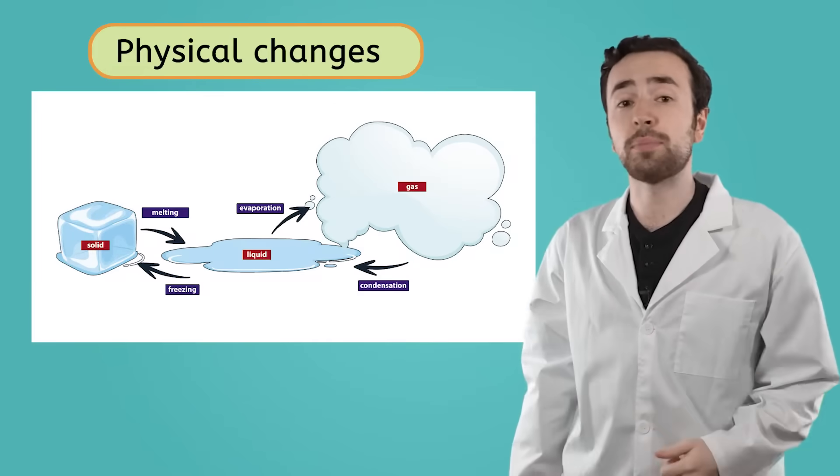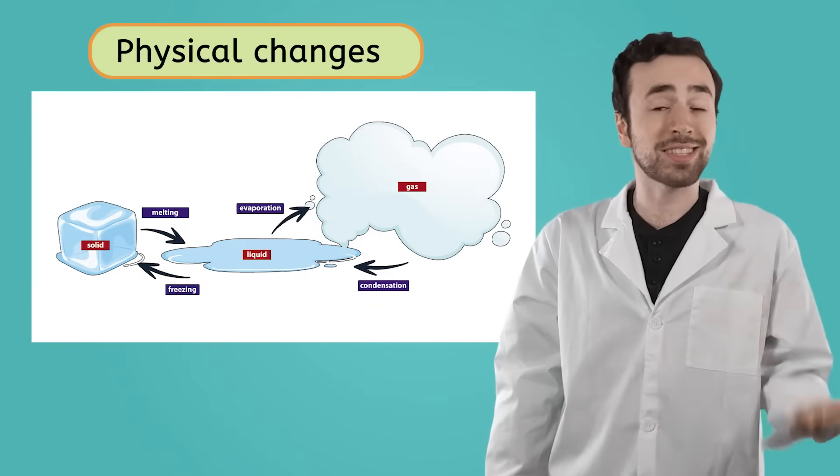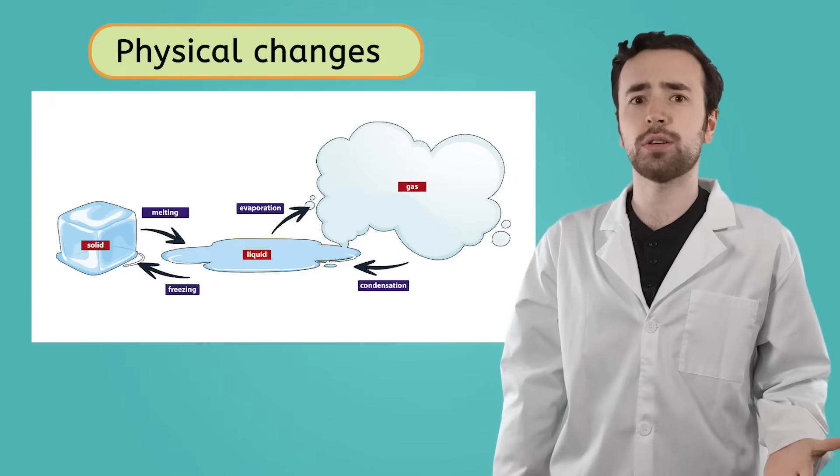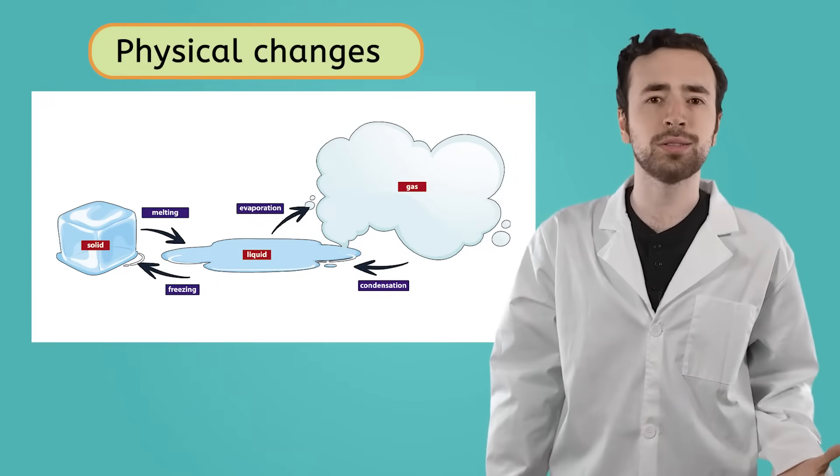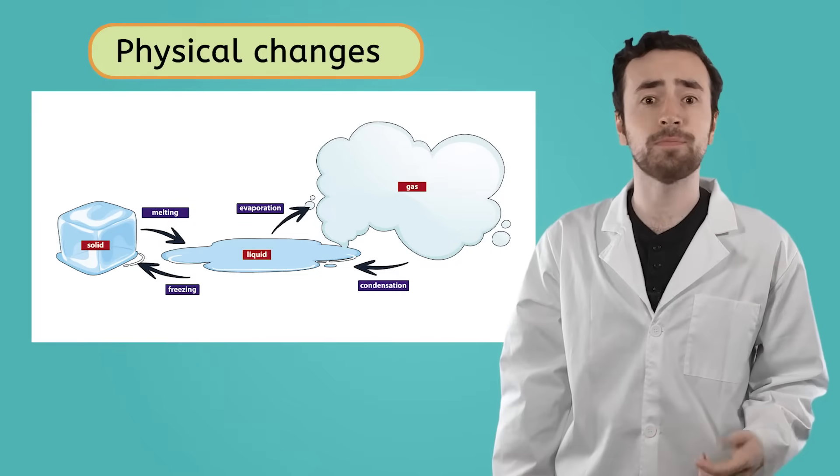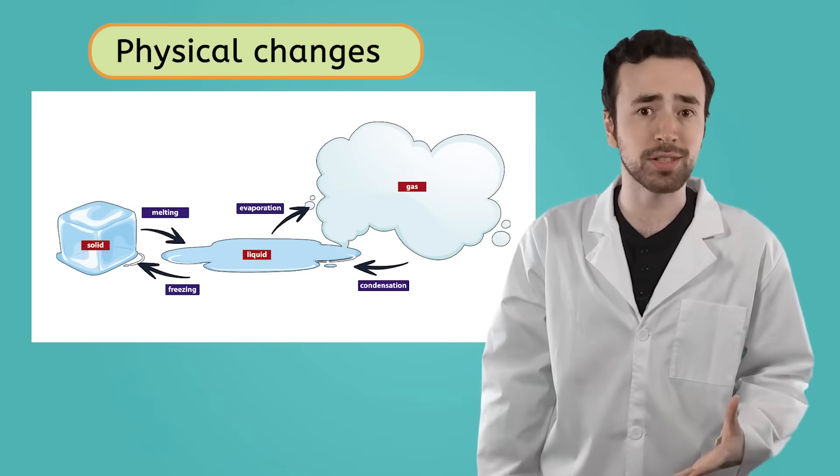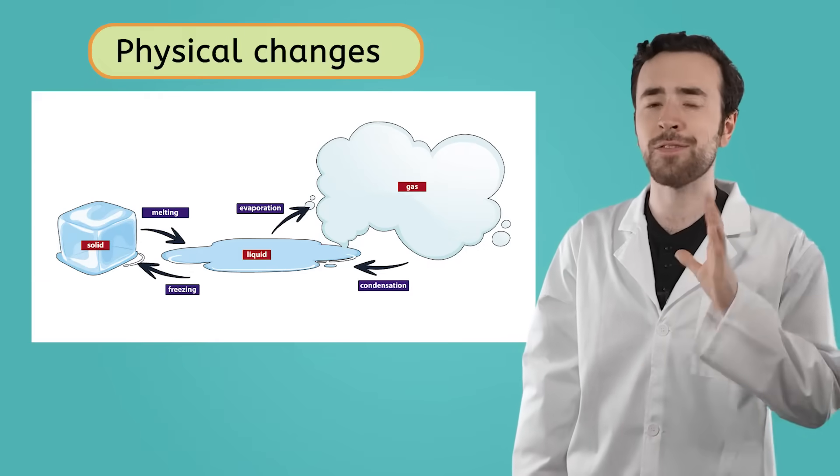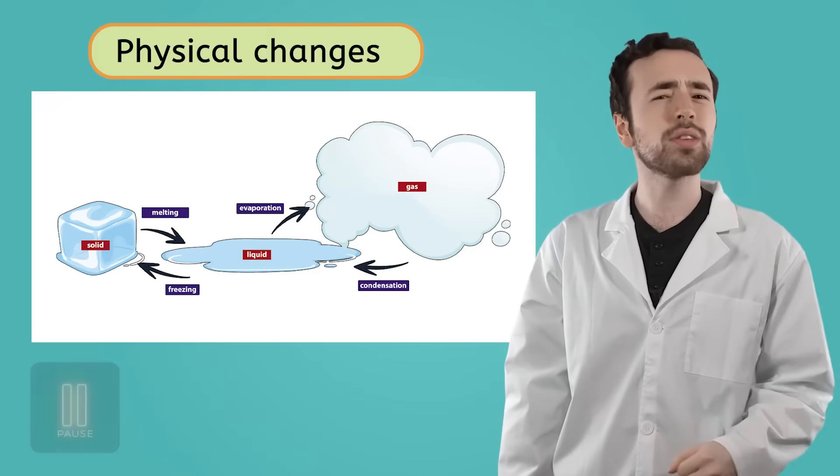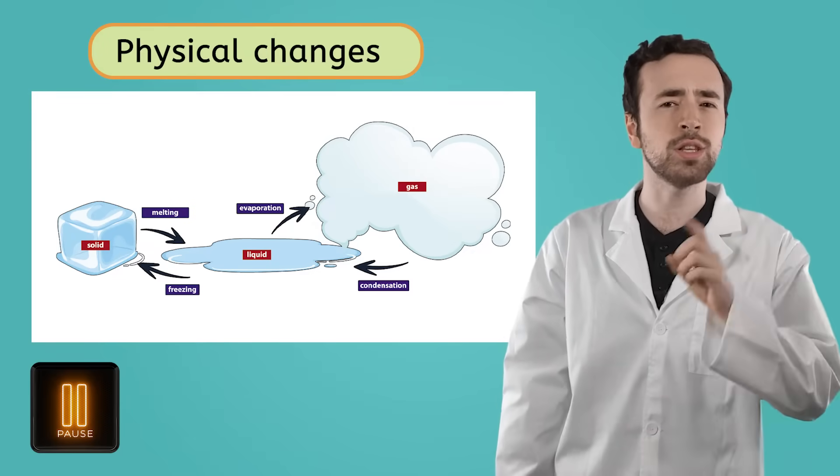Another great example of a physical change is a state change of matter. Water can freeze, melt, evaporate, condense over and over again, but it'll still be water. In a state change, no new substances are made, and so it is a physical change. What other kinds of physical changes can you come up with?